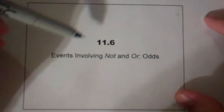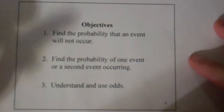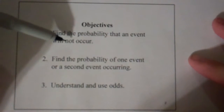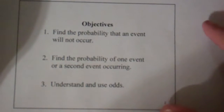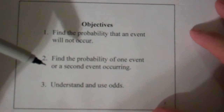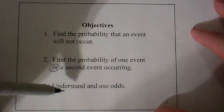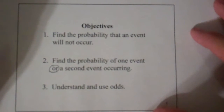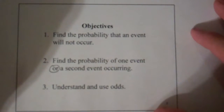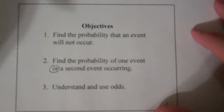So these are the probabilities of events involving the ideas of 'not,' 'or,' and odds. What we want to do is find the probability that an event will not occur — a lot of times that's easier or more important — find the probability of one event or a second event occurring, and then understand and use odds, which are just a slightly different way of representing probabilities using what will and will not happen to create a different type of ratio.